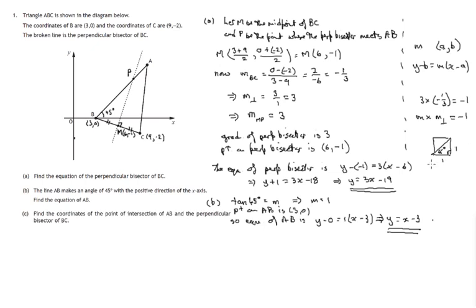So finally, part C, find the coordinates of the point of intersection of AB and the perpendicular bisector of BC. Well, that's this point P that we have. So we know two things. Equation of AB is, this is part C we're on. Equation of AB, we just worked that out, is y equals x minus 3. And equation of perpendicular bisector is y equals 3x minus 19. So we solve these together. Let's set them equal to each other, and that should help us along the way.